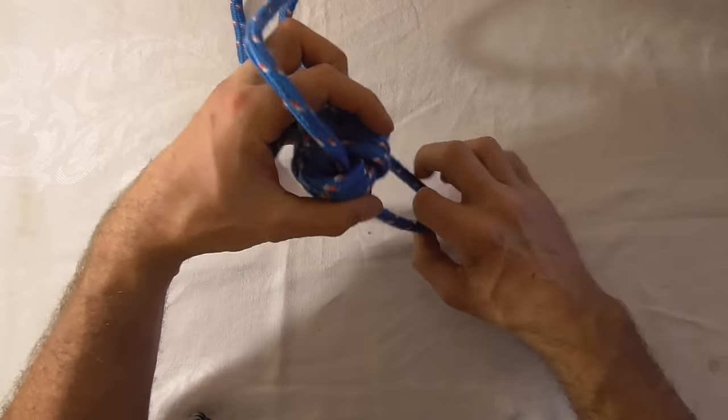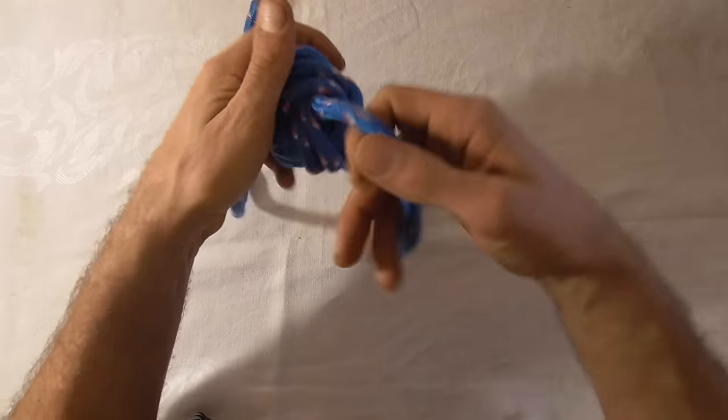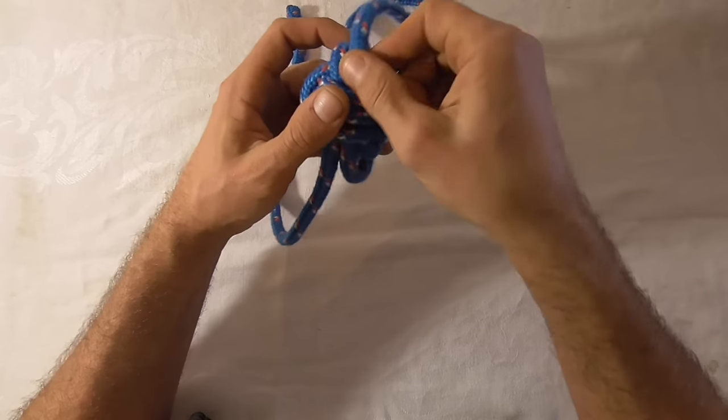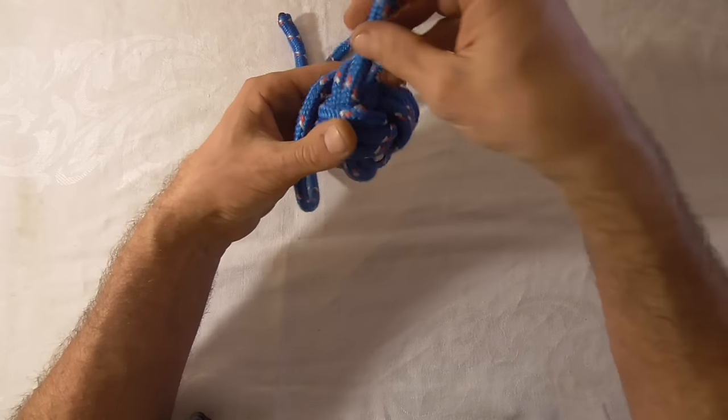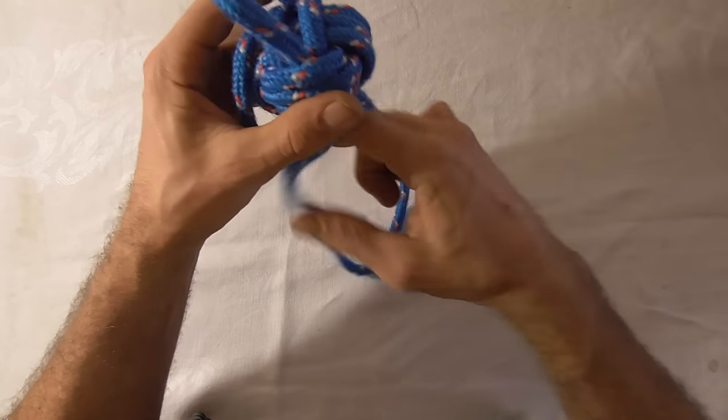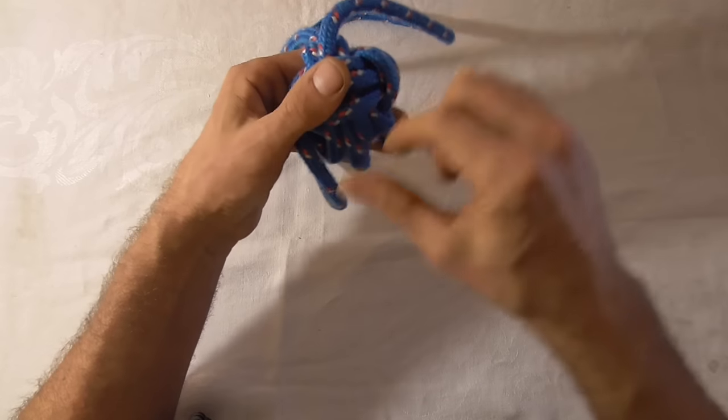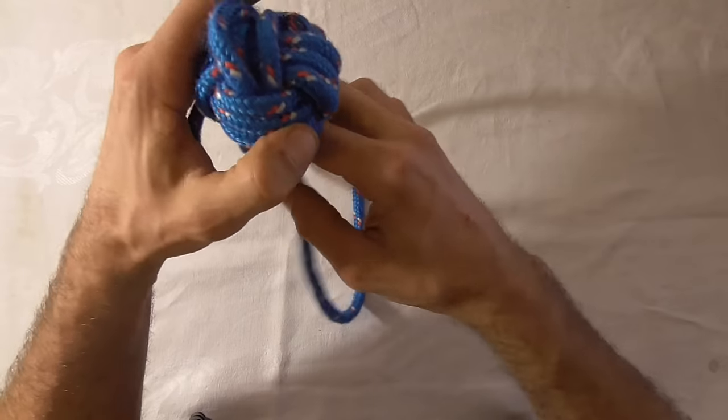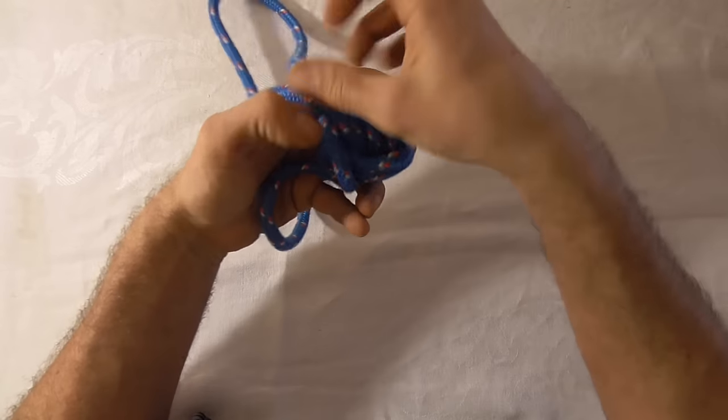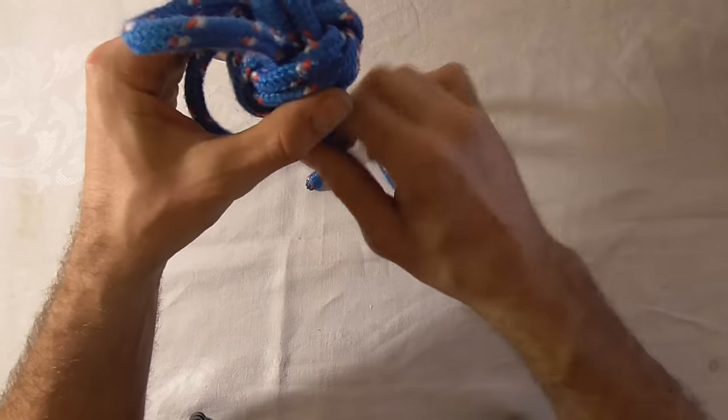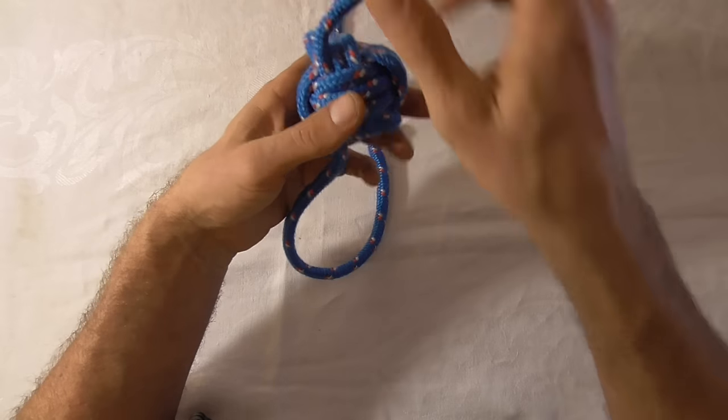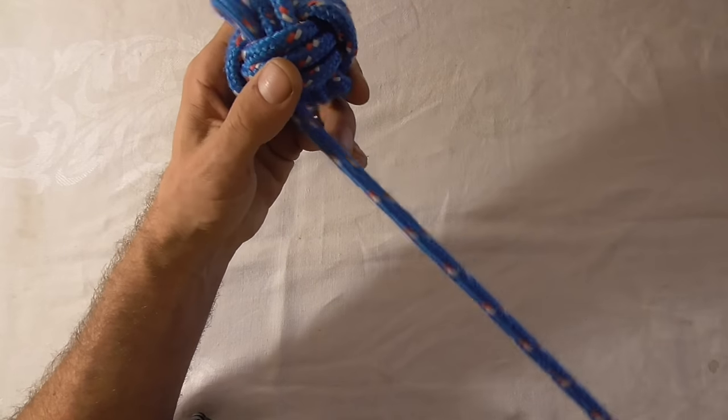And then we can continue along tightening the last three loops up. Always making sure that none of the strands cross. Almost there. Tighten this one up. That's the last one. There you are.